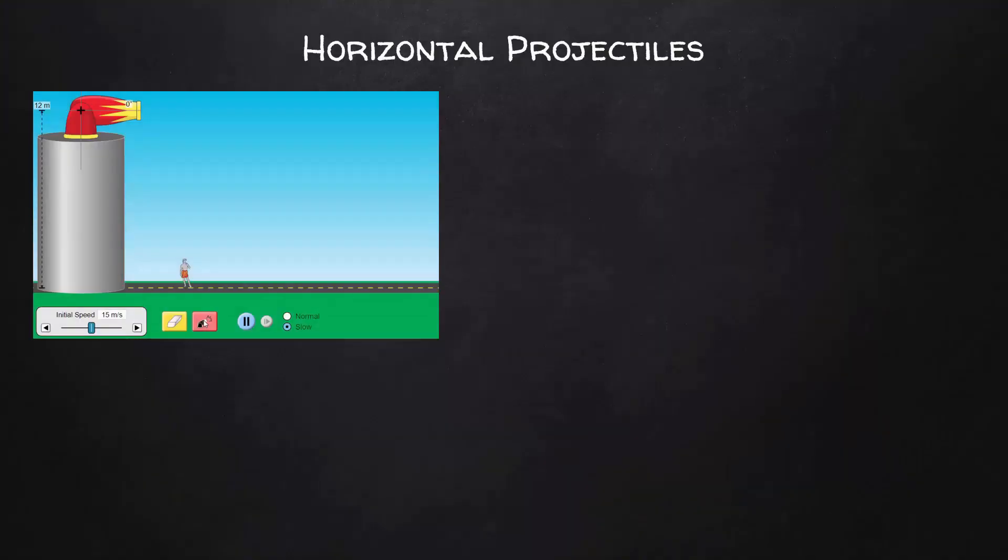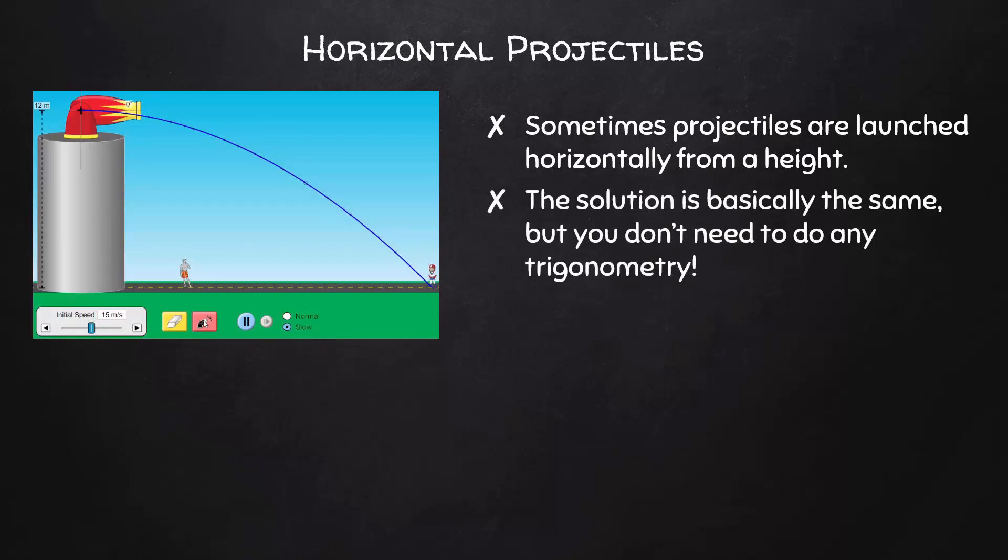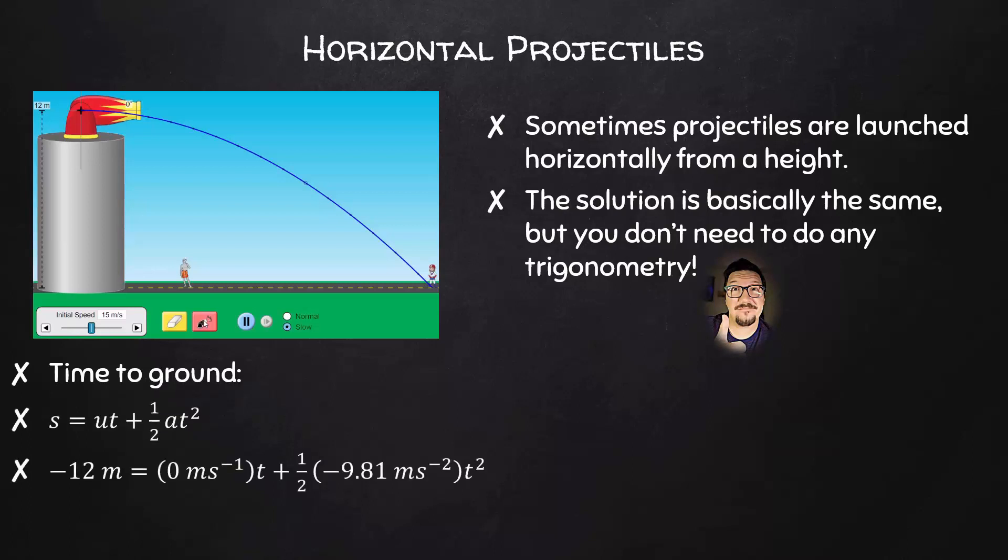In some other projectile problems, a projectile is launched horizontally from some height. The solution for this type of problem is basically the same as before, but it's actually kind of easier because you don't need to do any trigonometry. We'll start by finding the time to the ground using the displacement formula. It's important to note that since this projectile was launched horizontally, the initial vertical velocity is 0 meters per second. We'll find that this projectile took 1.6 seconds to reach the ground.